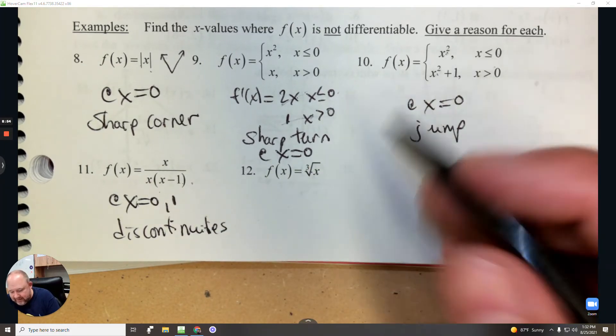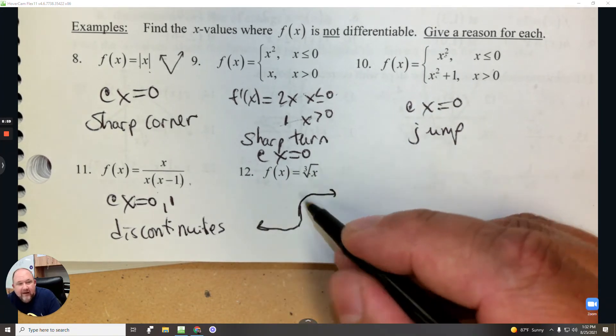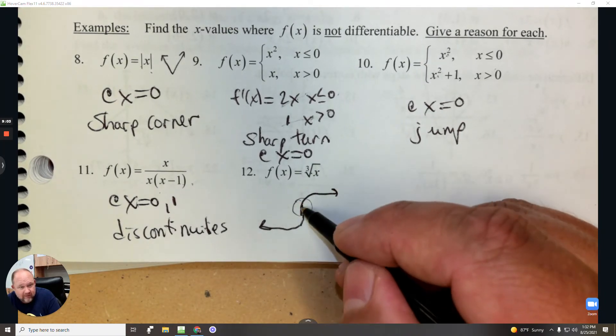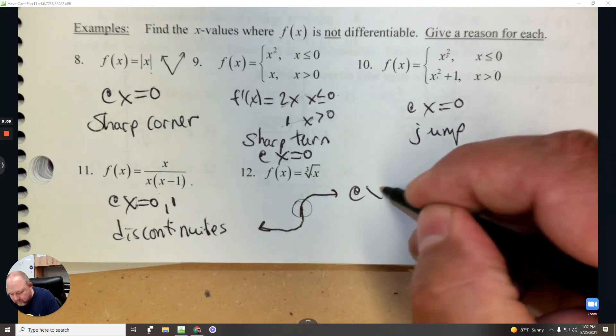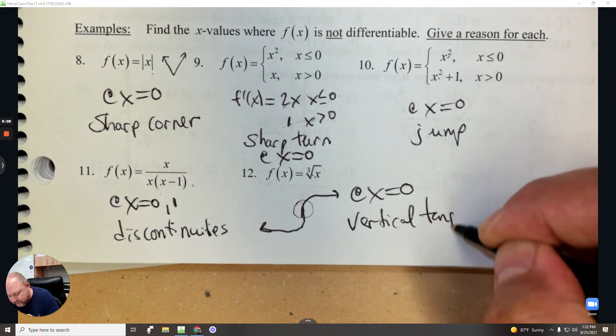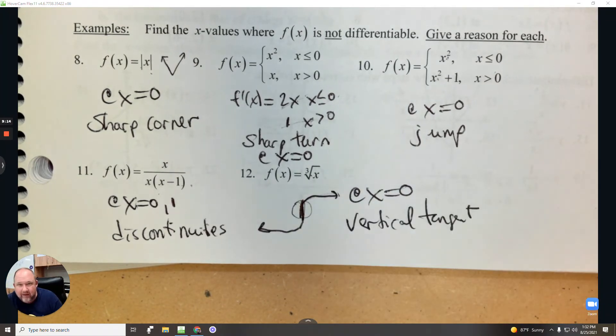The cube root of x. Right here, which is where the point of inflection is. At x equals 0 there's a vertical tangent there. So it creates a vertical slope at 0 for that graph.